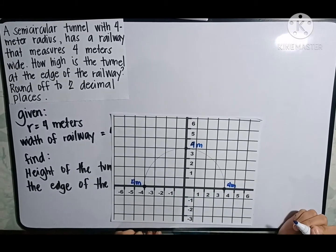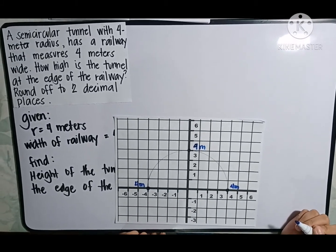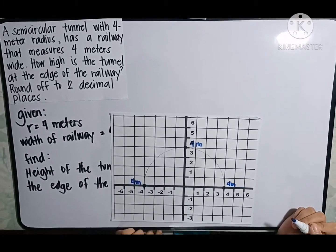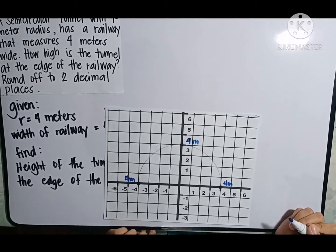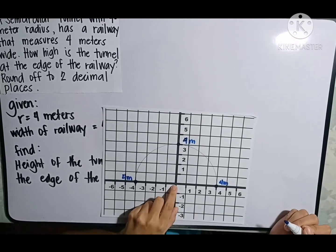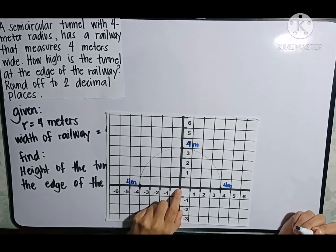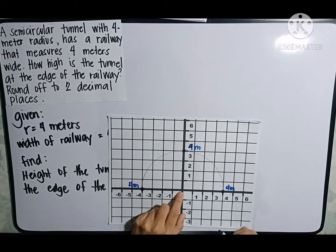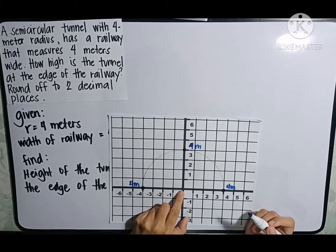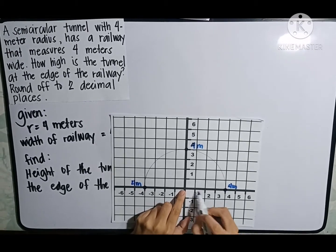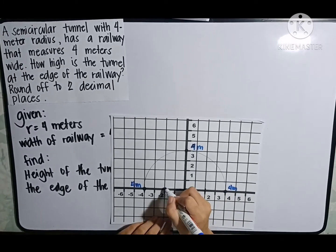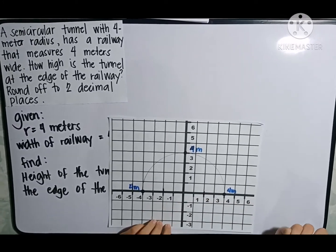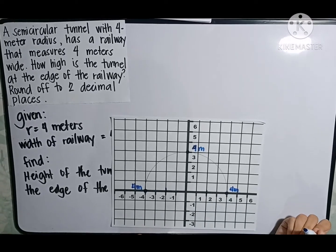The next thing to do is plot our railway. It says the railway measures 4 meters wide. And from the center, the width of the railway must be divided into 2. So 4 divided by 2 is 2. Let's count to 1, 2, it's up to here. 1, 2, up to here.